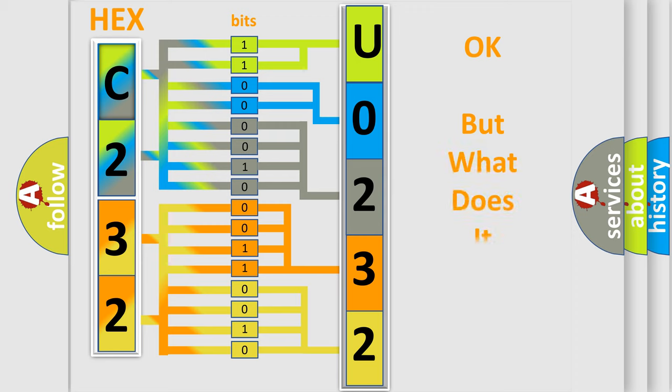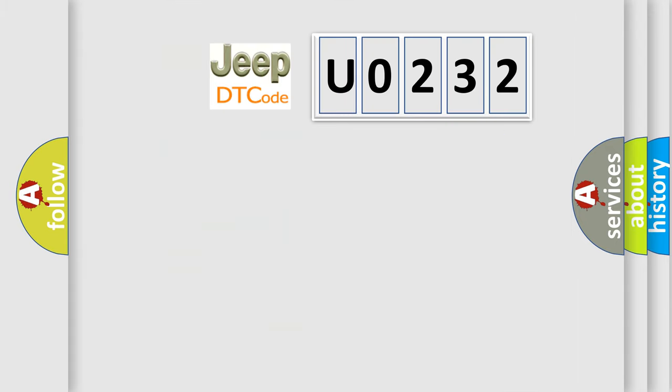The number itself does not make sense to us if we cannot assign information about what it actually expresses. So, what does the diagnostic trouble code U0232 interpret specifically for Jeep car manufacturers?